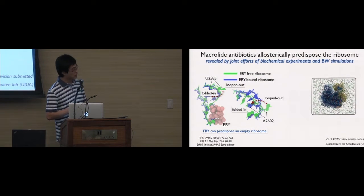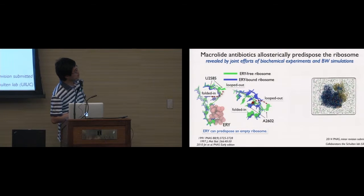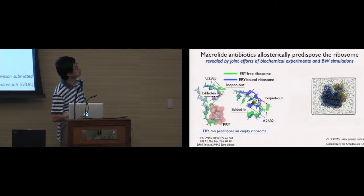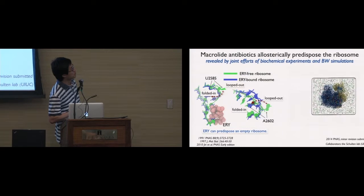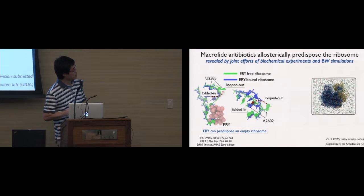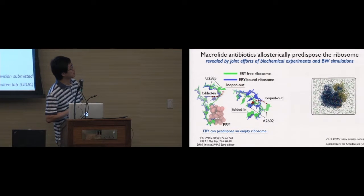So we modeled the same system in our experiments. We performed MD simulations on Blue Waters — we modeled a drug-free ribosome system using the E. coli ribosome, because that's the system we studied with our biochemical techniques. We also modeled the erythromycin-bound ribosome. By performing microsecond simulations, we found that when the drug is present, actually two nucleotides changed conformations. The first one is U2585, which was also observed in the biochemical studies. The other one is A2602. Both nucleotides changed from a looped-out orientation to a folded-in orientation.